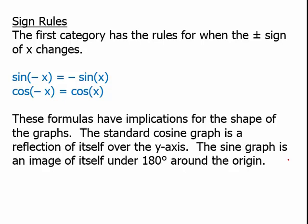These formulas have implications for the shape of the graphs. The standard cosine graph is a reflection of itself over the y-axis. The sine graph is an image of itself under 180 degrees rotational symmetry around the origin. If you're familiar with the ideas of an even function and an odd function, cosine is an even function and sine is an odd function. That's convenient to know, but the ACT does not ask about those kinds of symmetries.